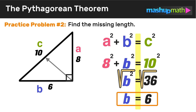The length of the missing side in this example is 6. We used the Pythagorean theorem — given two sides of a right triangle — to find the missing side. Hopefully you're starting to get the hang of this. Let's go ahead and take a look at one more example.